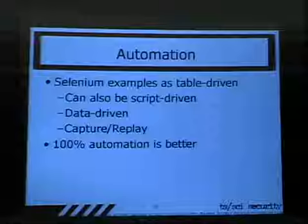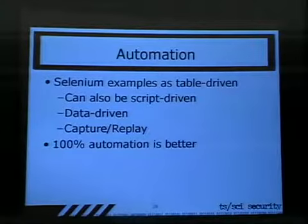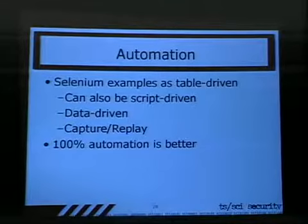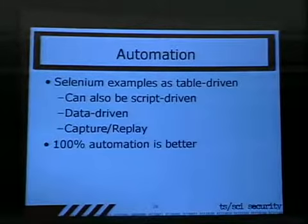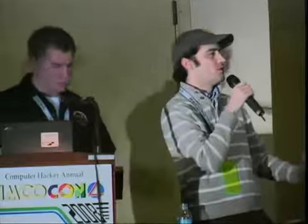The Selenium examples are table-driven, but they could also be script-driven, data-driven, or capture-replay. Ideally, you want to get 100% automation. Some people think automation costs a lot of money, but in these cases all the tools are open source, which reduces cost. The complexity of these tools is also much lower than quality testing tools used to be — people used to say automation took 50-60% of the development budget, but that's just not true today.